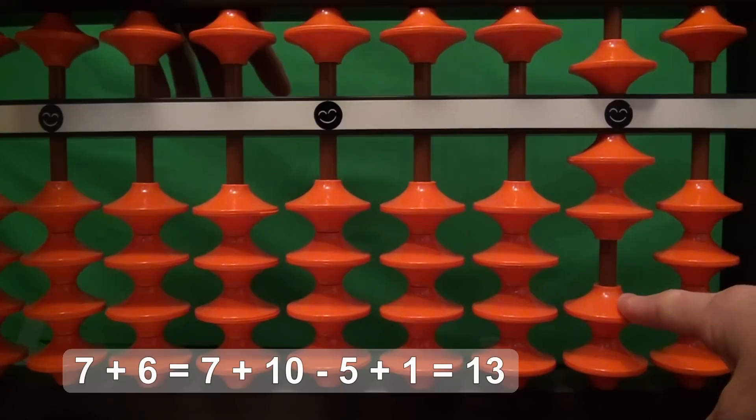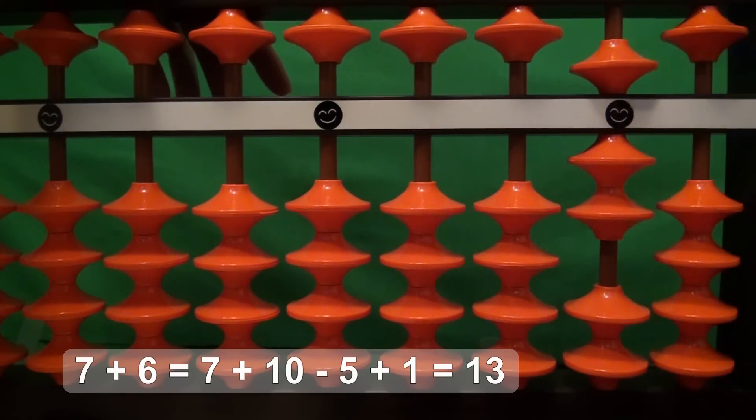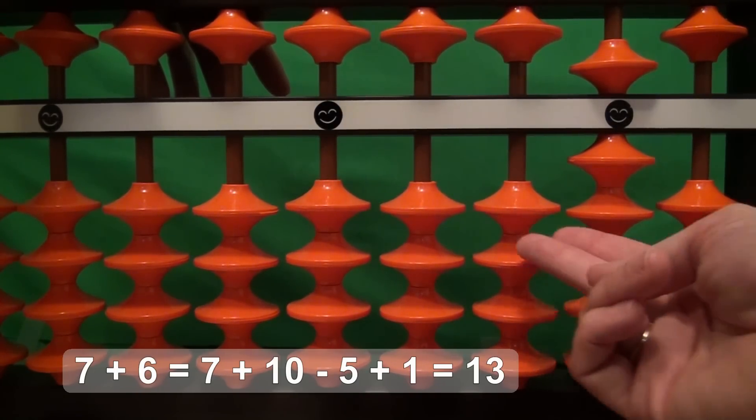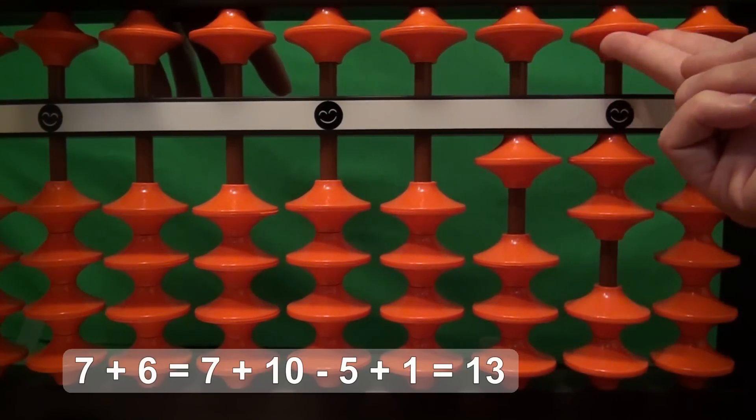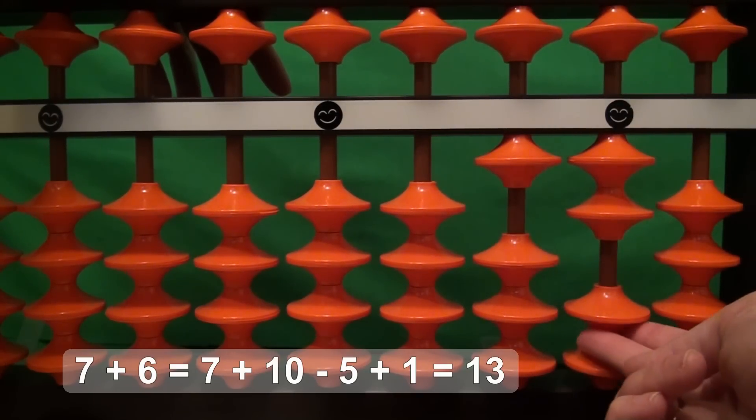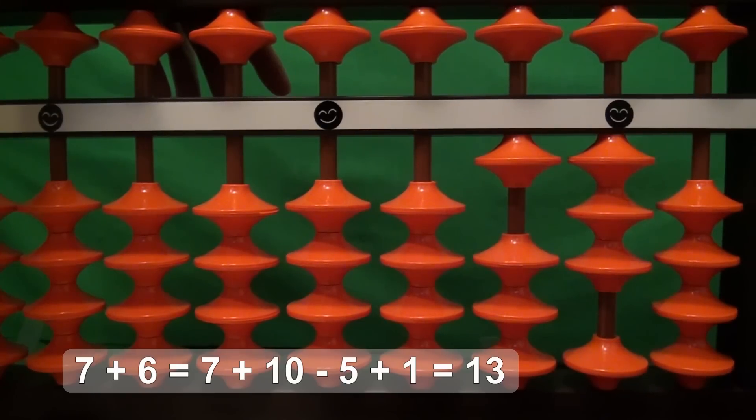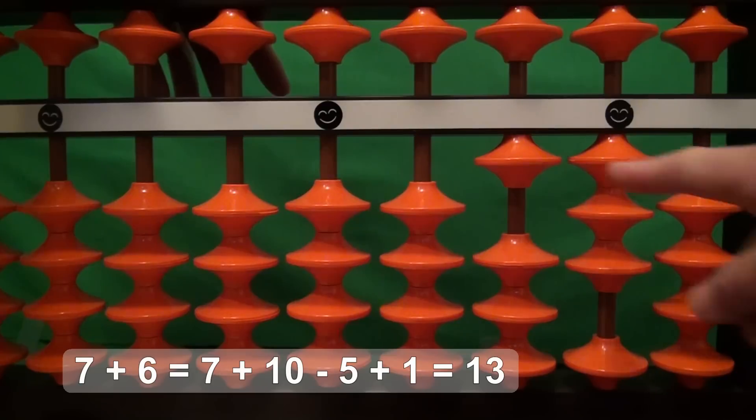We have one bead down here that we can use, but we don't have another 5 bead. So we have to think of adding 5 as adding 10 and taking away 5. We add 10, take away 5—that's adding 5—and then we add one more for the 6. So 7 plus 6 equals 13.